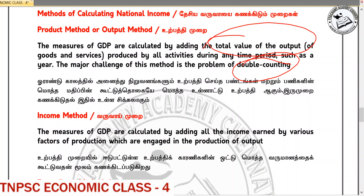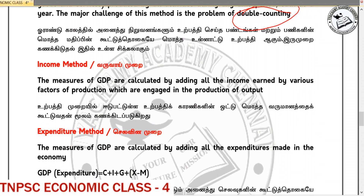When you say the income method — forget the product method. The factors of production: this concept means land, labor, capital, and entrepreneur. They are the factors in a country — land, labor, capital, and entrepreneur.